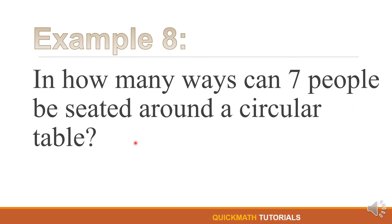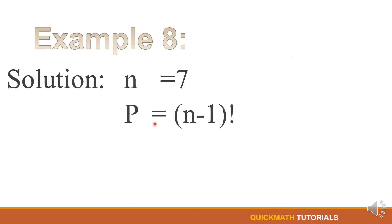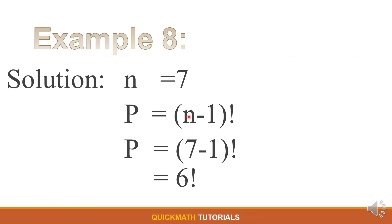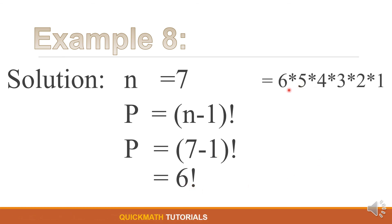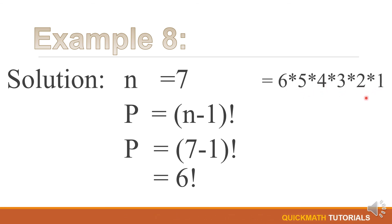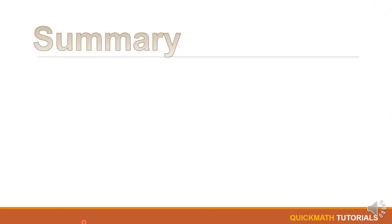For our last example, in how many ways can 7 people be seated around a circular table? For our solution, n is equal to 7. Using the formula, P equals (n minus 1) factorial. By substitution, 7 minus 1 equals 6 factorial, and 6 factorial is 6 times 5 times 4 times 3 times 2 times 1, which is equal to 720.